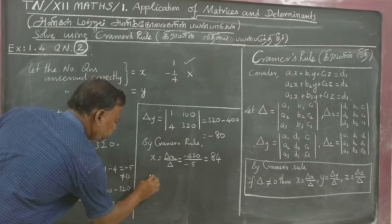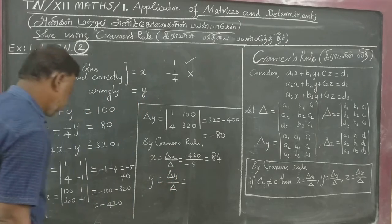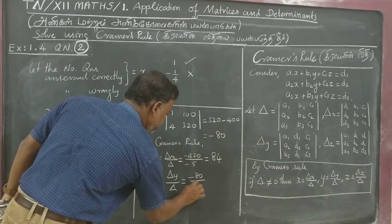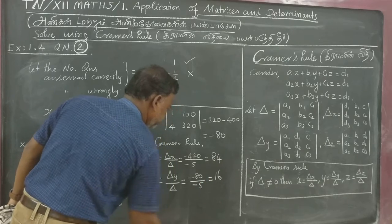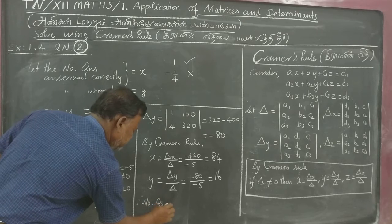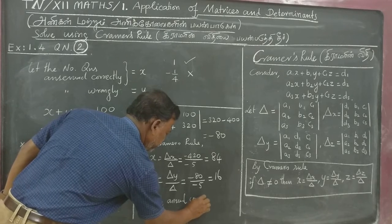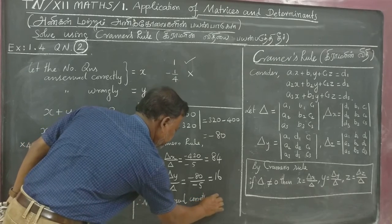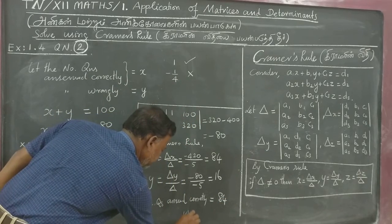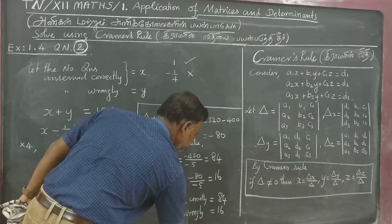And then y equal to delta y by delta. That is equal to minus 80 by minus 5, that is equal to 16. Therefore, number of questions answered correctly is 84.